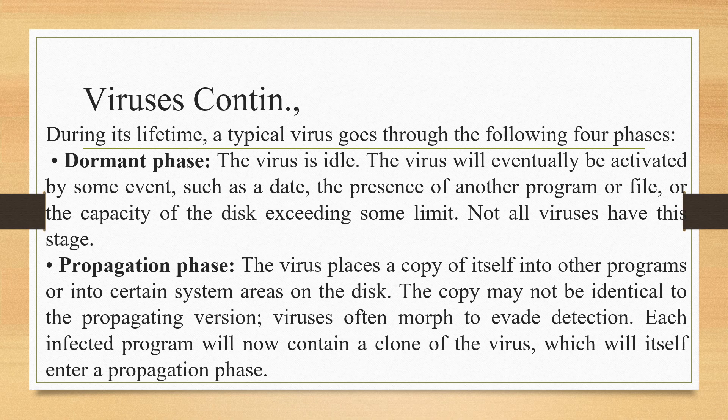The second is the propagation phase, in which the virus places a copy of itself into other programs or into certain system areas on the disk. The copy may not be identical to the propagating version — viruses often mutate to avoid detection. Each infected program will now contain a clone of the virus, which will itself enter the propagation phase.